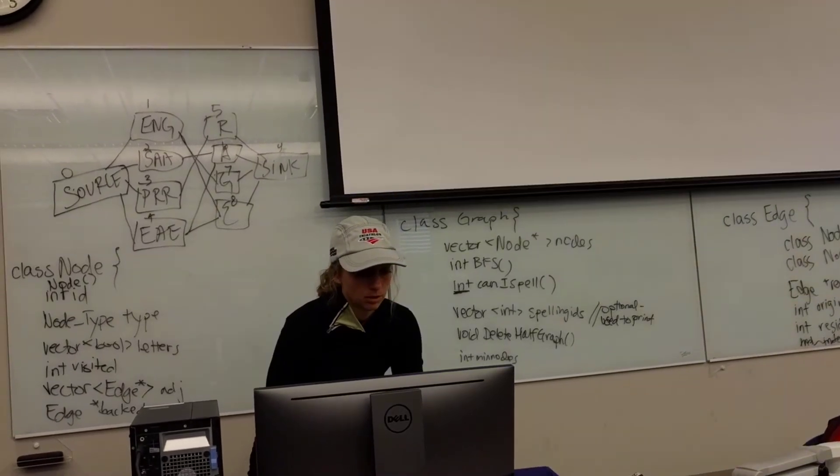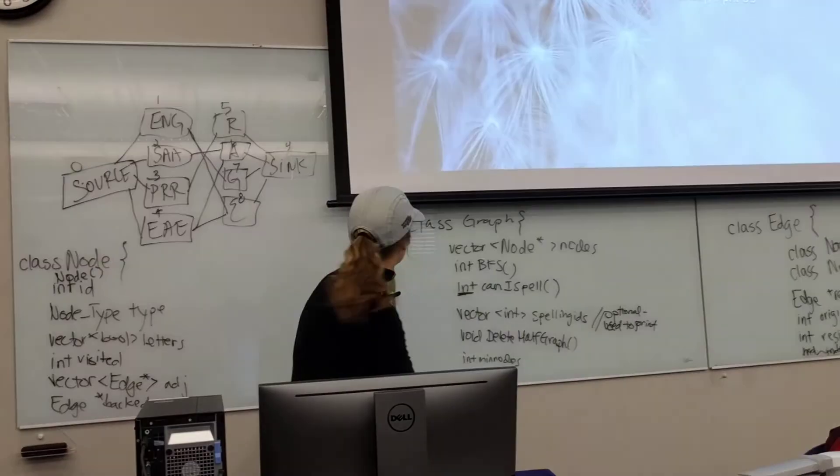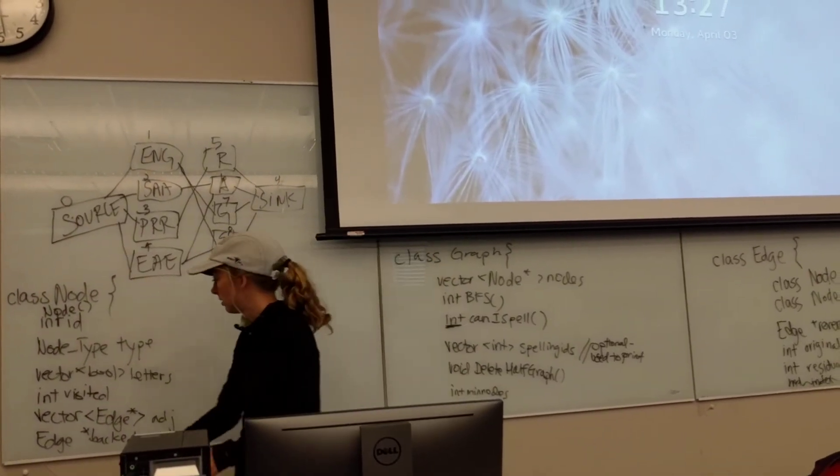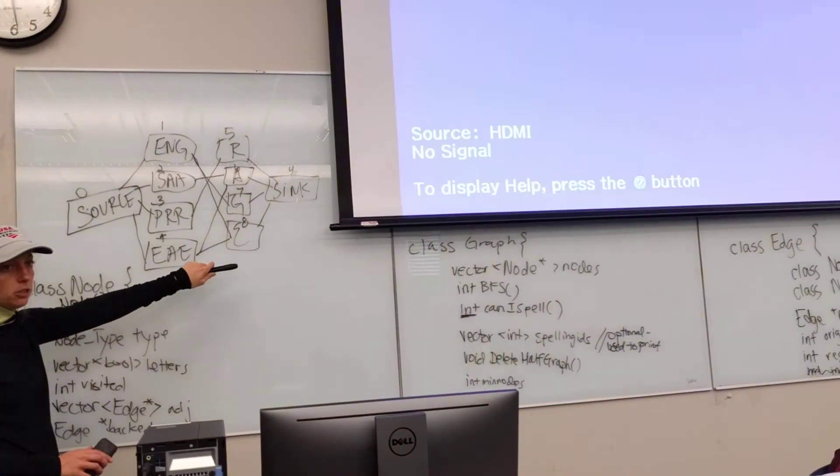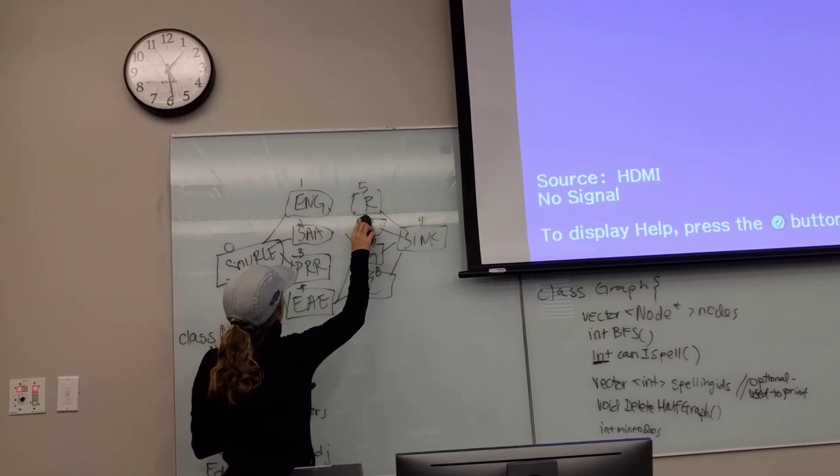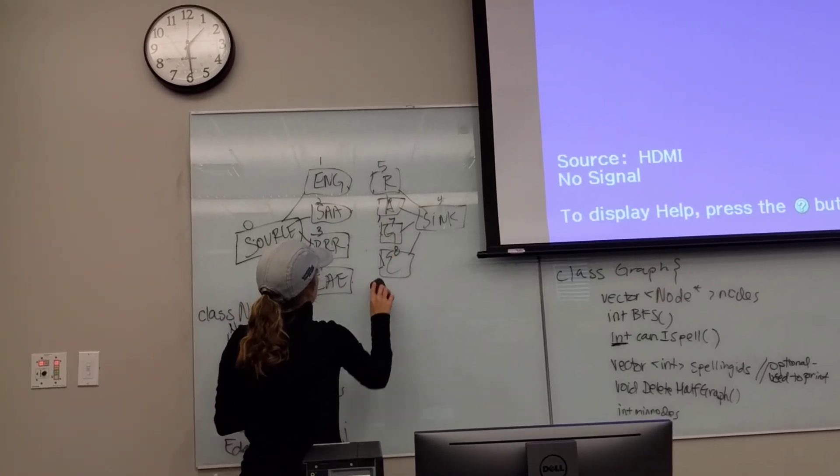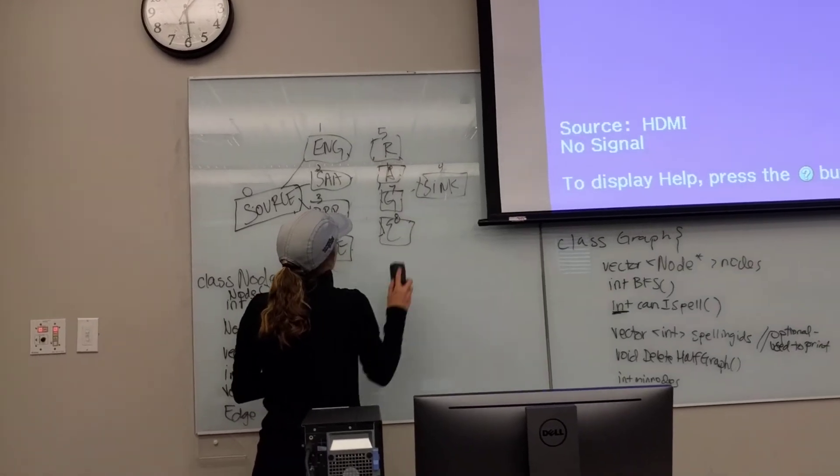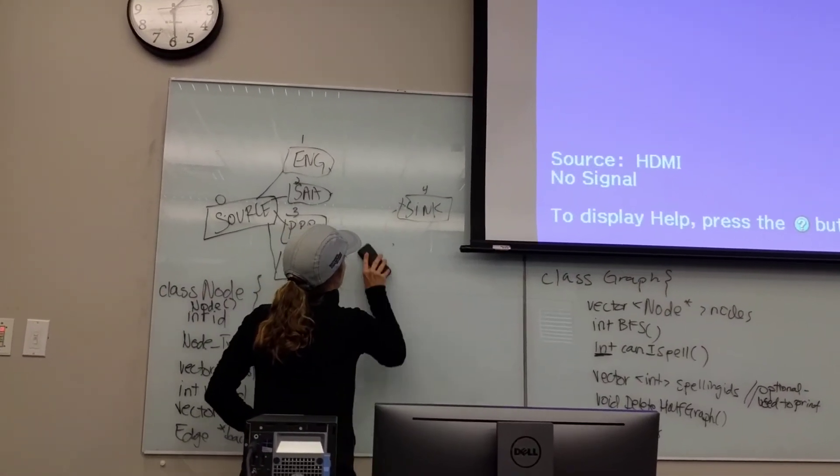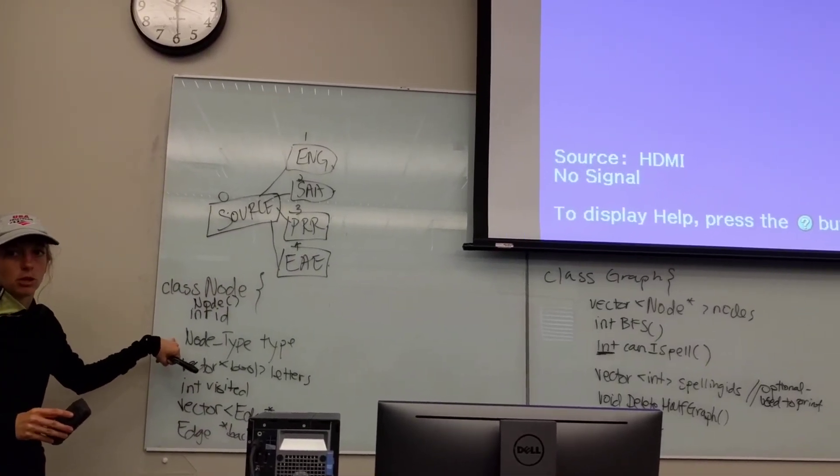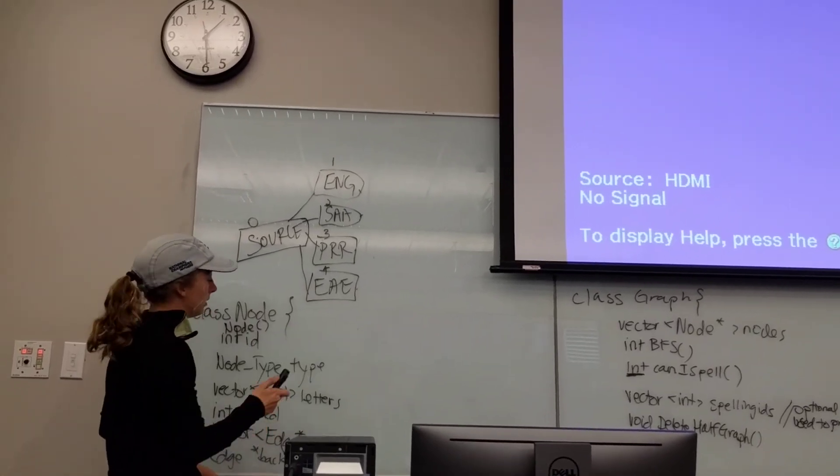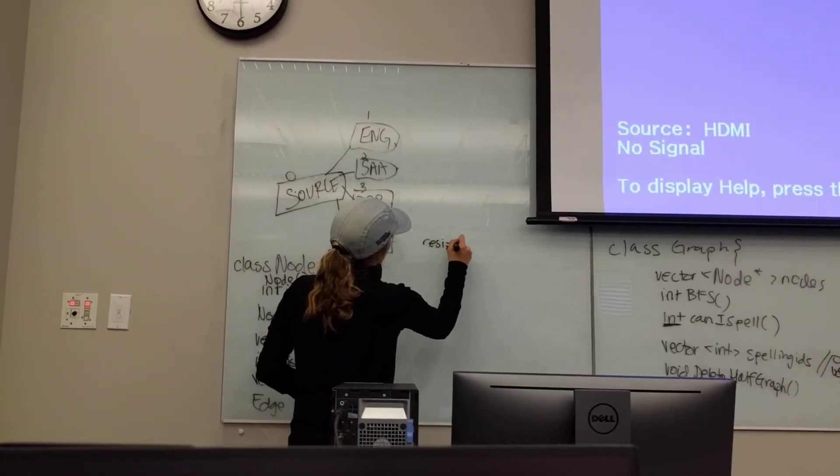This helps you out with not creating a bunch of graphs. So I was talking about before, if you figured out if you can spell rage or not, what delete half graph should do is, after you've printed out the way to spell rage, I'm going to call delete half graph. And it will erase all of these edges, the edges between the dice nodes and the word nodes. It's going to delete all of these edges, the edges between the word nodes and the sink. And then it's going to delete these, which your node type makes really easy. You just go through your nodes and say, if sink delete, if word node delete. And resize.